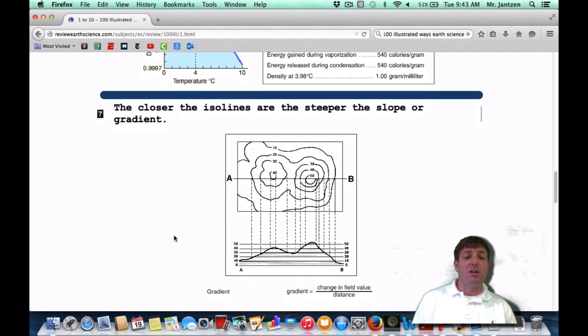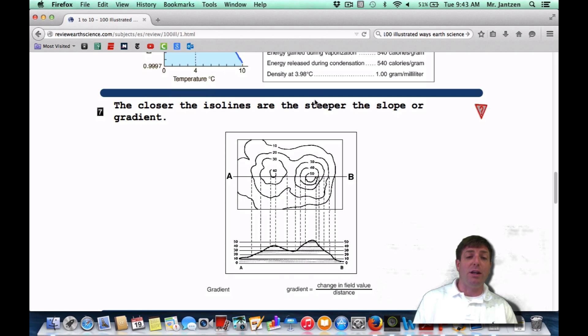Number seven, the closer the isolines are, the steeper the slope or the gradient. Isolines connect points of equal value. When they get closer and closer together, they're increasing the gradient because you're having a quick change over short distance. Whenever you have a quick change over short distance, that's kind of what a hill is. You're basically changing the elevation very quickly over a small distance. So the closer the lines are together, the steeper the slope. And there's your formula for gradient from your reference tables: change in field value divided by distance.